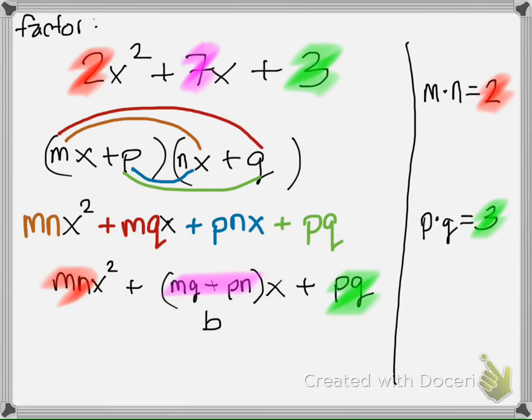So let's look at some factors of m and n. How do I get to 2? I need to multiply 1 times 2. How do I get to 3? I need to multiply 1 times 3. Now we need to put it together to find out what values of b work out best.